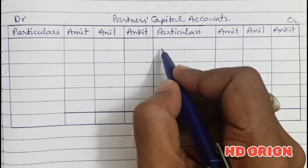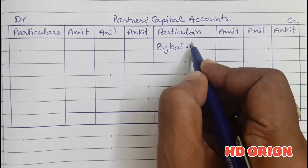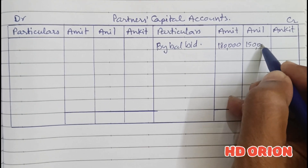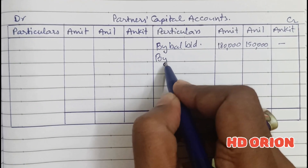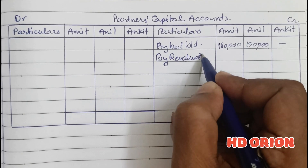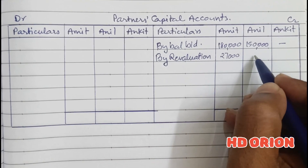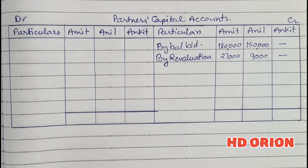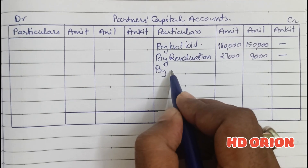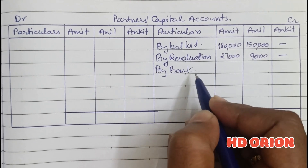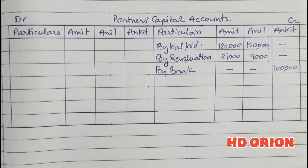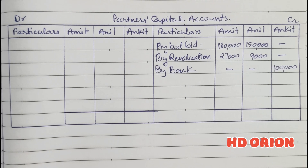Now for the partners capital account, first we write the balance brought down for old partners: rupees 1,80,000 for Amit and rupees 1,50,000 for Anil. Then revaluation account profit: rupees 18,000 and rupees 9,000 as calculated. The new partner Ankit is bringing his capital, so by bank or by cash, Ankit is bringing rupees 1,00,000 as capital and premium for goodwill of rupees 60,000.